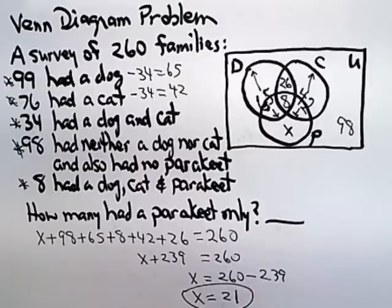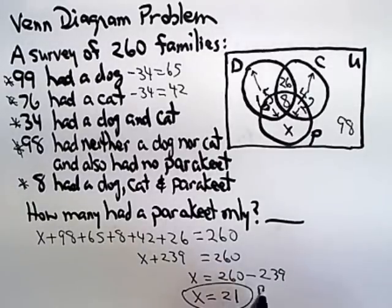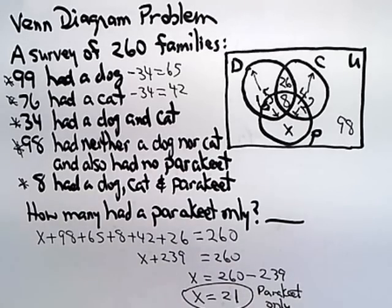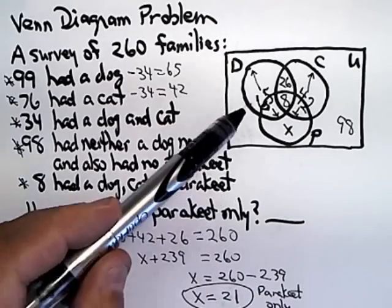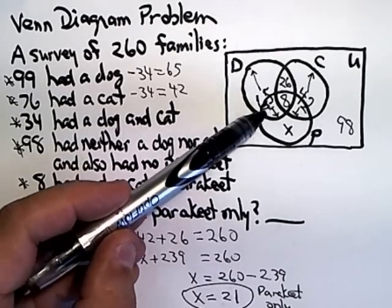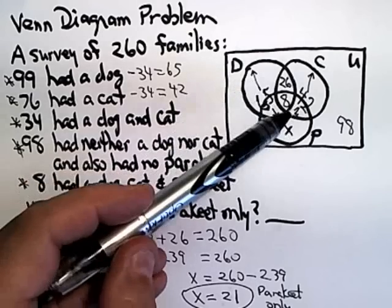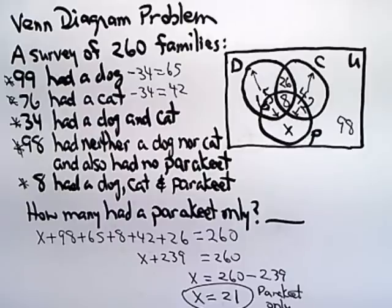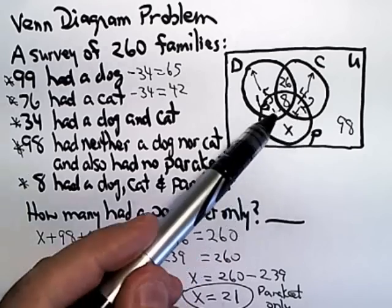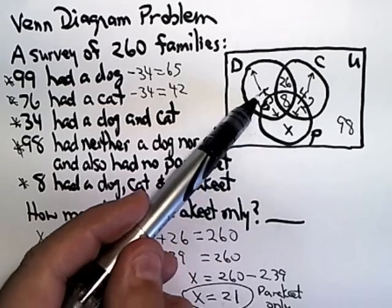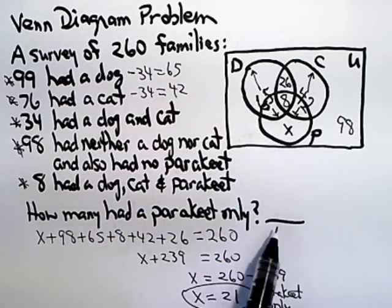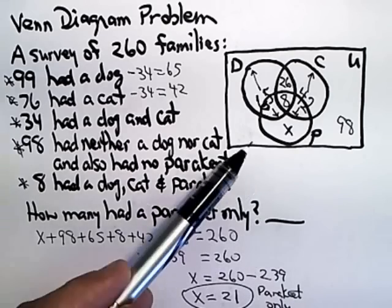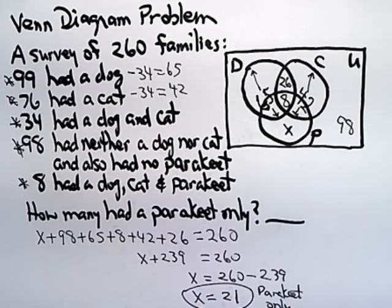So, there are 21 families that had a parakeet only. And that problem was a little tricky because you weren't able to put numbers individually in these two regions. You just had to lump them together. But once you see how that trick works, then you've got it from then on. So, if you're ever given a problem where you don't have enough information to put everything in, assuming the question allows it, you can probably get by with just lumping things together.